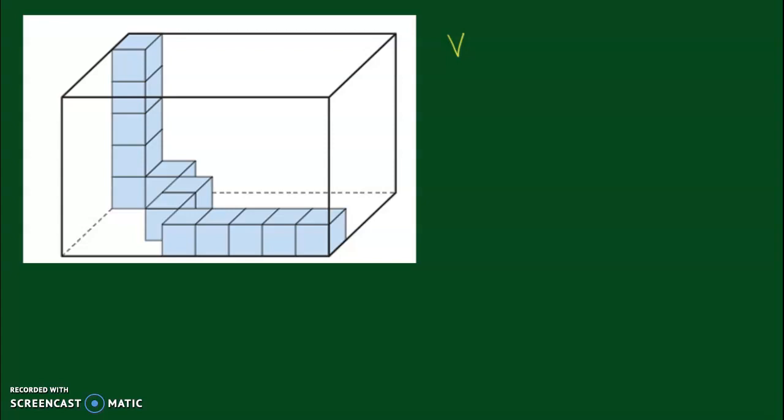Hello, in this video we're going to be using cubes to find the volume of this prism here. As you can see, this prism isn't completely filled with cubes, it's only partially filled. So, what would the volume be if we did fill up the whole thing?